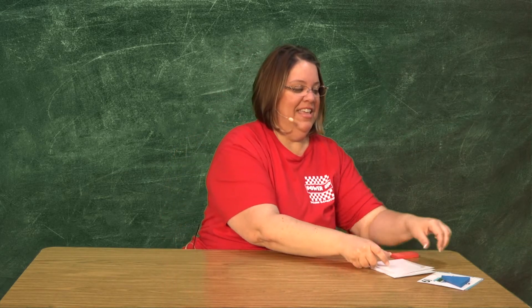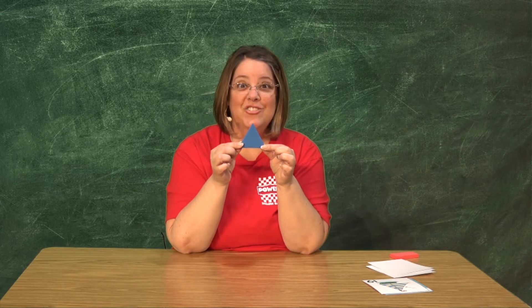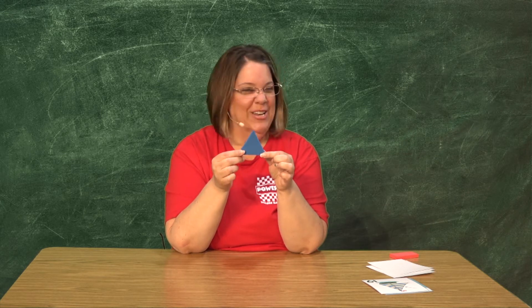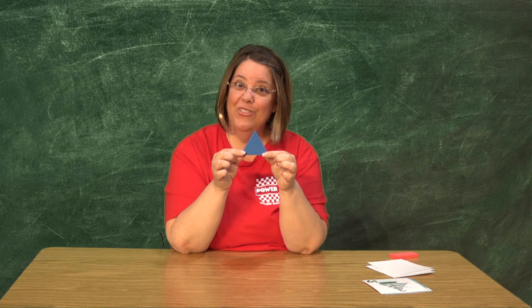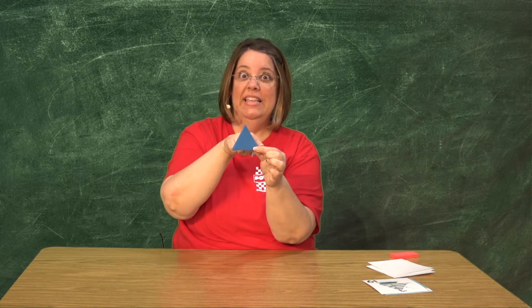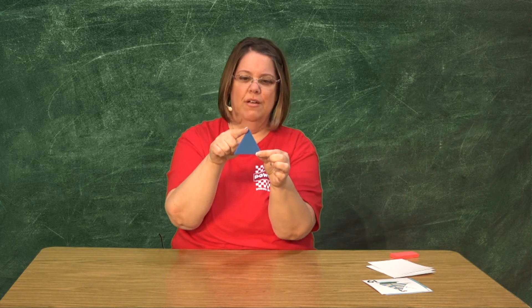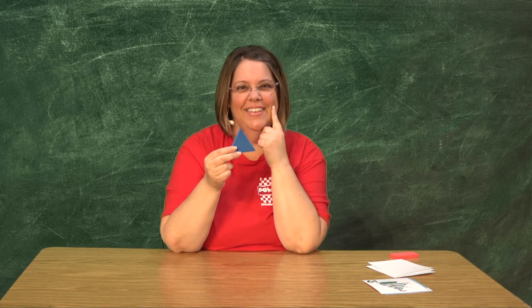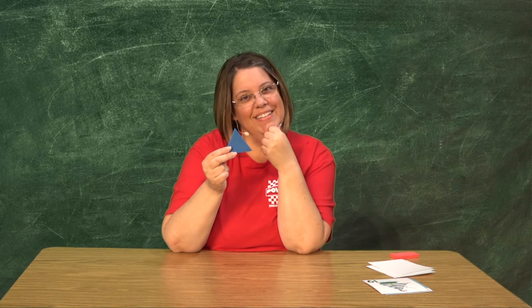Ahora voy a cambiar al siguiente figura que se llama triángulo. Este se ve medio chistosito porque no tiene cuatro lados y no tiene cuatro esquinas. Vamos a contar las esquinas primero: una, dos, tres. Tiene tres esquinas. Vamos a contar los lados también: una, dos, tres. Tiene tres lados. Qué chistoso que tiene tres esquinas y también tiene tres lados.